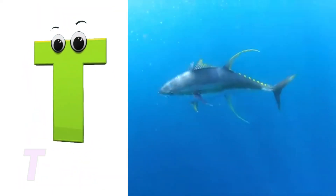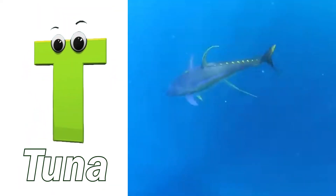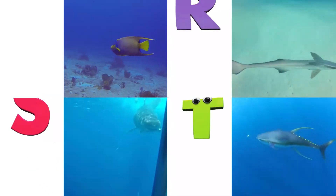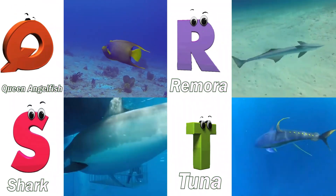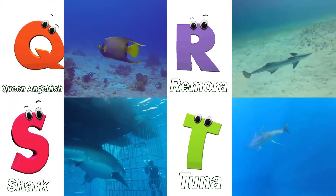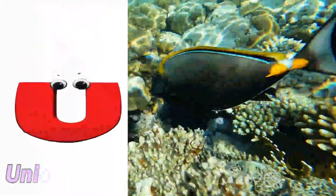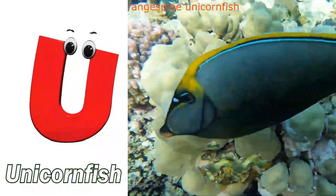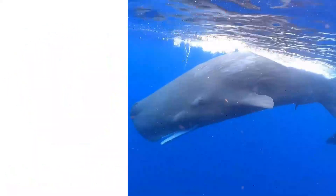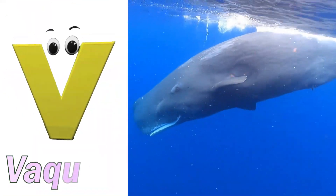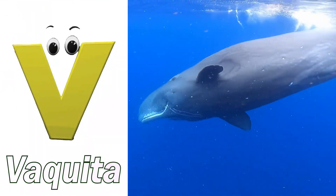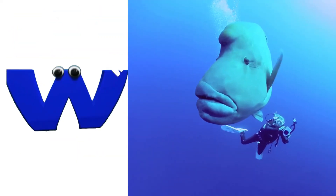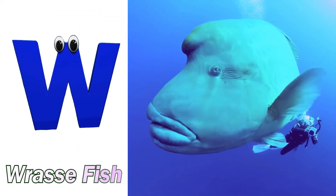T is for tuna. Tuh, tuna. U is for unicorn fish. Uh, unicorn fish. V is for vaquita. V, vaquita. W is for wrasse fish. Wuh, wrasse fish.